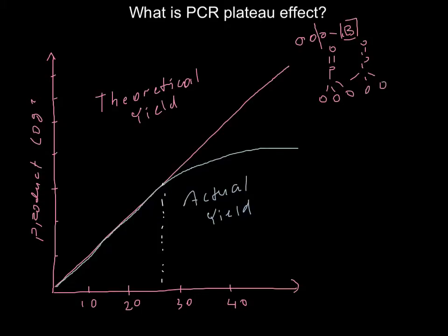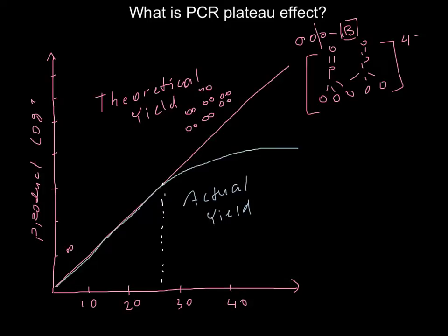The cleaved portion is pyrophosphate, and this is the byproduct. With each cycle we accumulate more and more of this byproduct. Starting from very little at the beginning, its concentration rises, and this is one reason why results are best between 20 and 30 cycles.